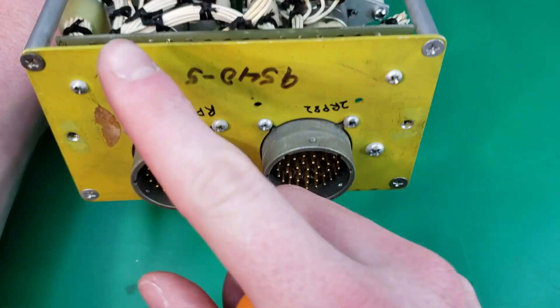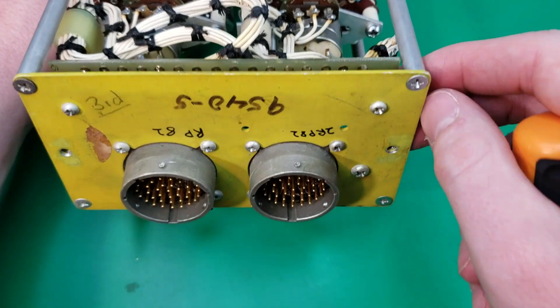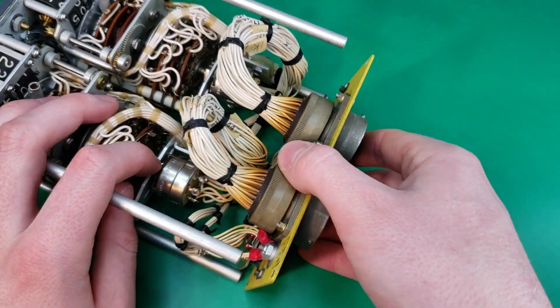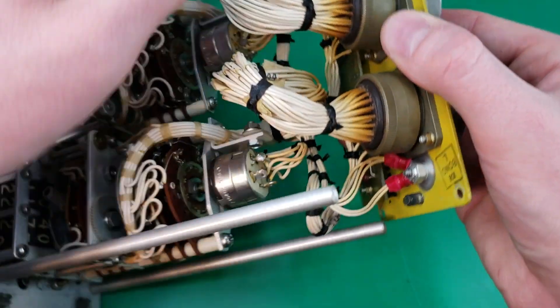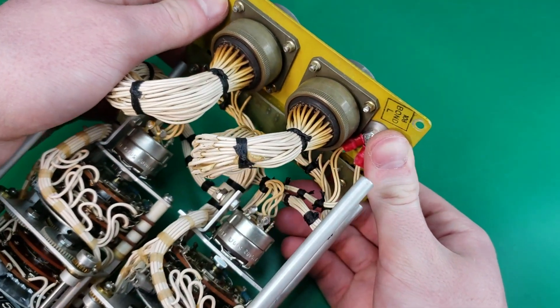Alright, next let's take out these four screws that hold on this back panel here. Alright, now it should come off. We can only pull it away so much because of the wiring harnesses.